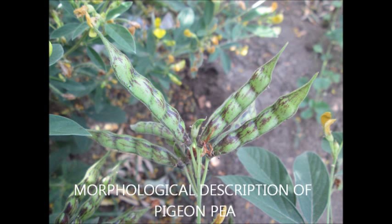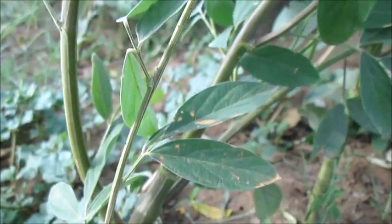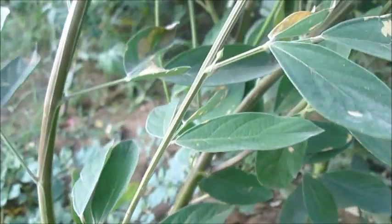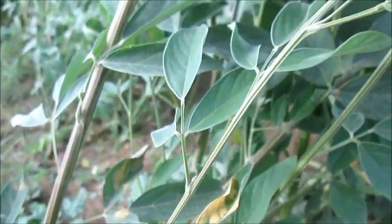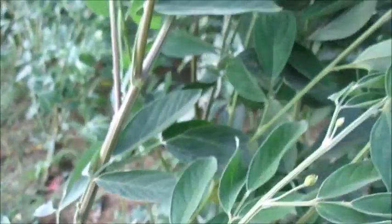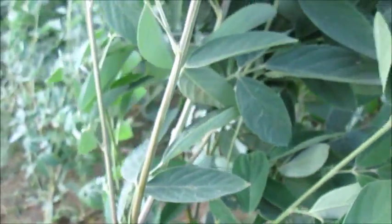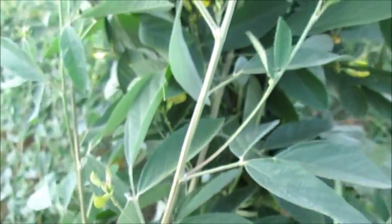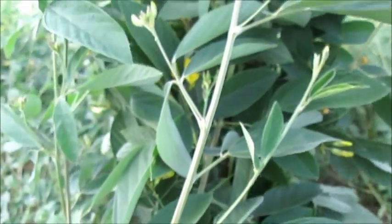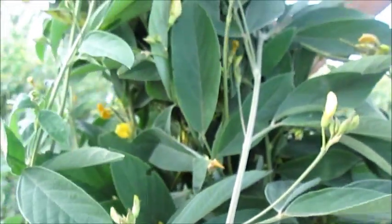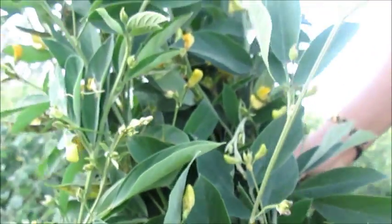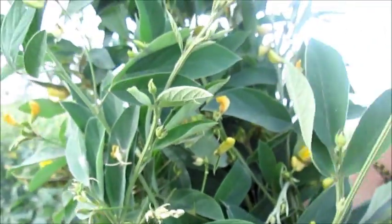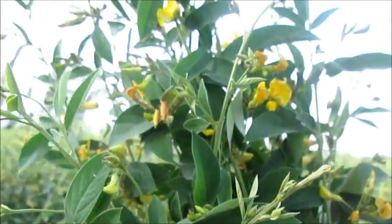A pleasant welcome to you all. In this video, we are going to see about the morphological description of PGNP. The PGNP name was first reported from plants used in Barbados. Babylon concluded that PGNP originated in India. Vander Mason concluded that India was the primary center of origin and Africa was the secondary center of origin of PGNP. It is cultivated in many countries in the tropics and subtropics.